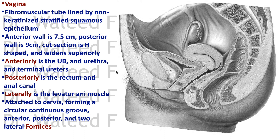The vagina is a fibromuscular tube lined by non-keratinized stratified squamous epithelium. The anterior wall is shorter than the posterior wall. In cross-section it is H-shaped and widens superiorly. Anteriorly are the urinary bladder, urethra, and terminal ureters; posteriorly are the rectum and anal canal; laterally is the levator ani muscle. The cervix enters the anterior wall forming a continuous groove called the fornix, divided into posterior, anterior, and two lateral fornices.